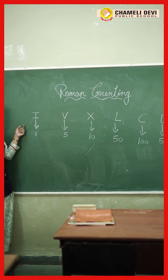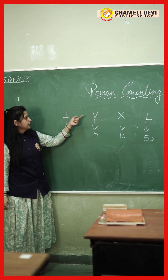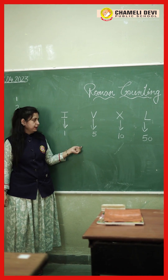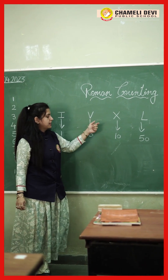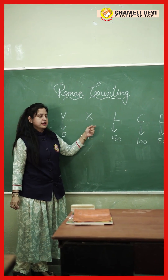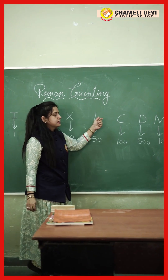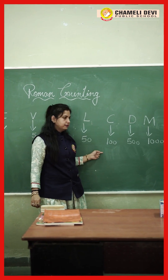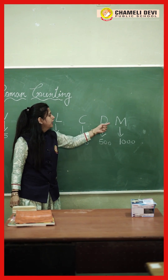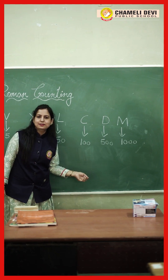Once again we will repeat: I stands for 1, V stands for 5, X stands for 10, L stands for 50, C stands for 100, D stands for 500, and M stands for 1000.